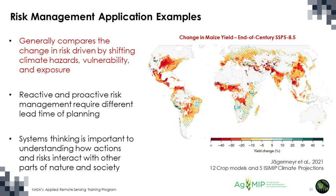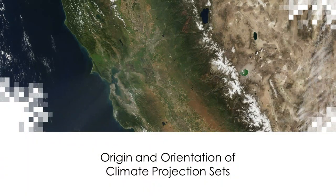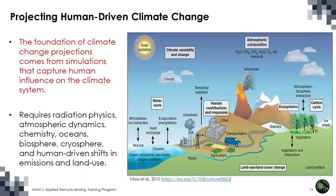In all of these examples, the particular nature of the application suggests certain types of projection sets we might look for. As we think about climate projection sets, it's worth understanding the origin and orientation of the groups making them. Climate change projections begin with an understanding of the climate system itself, requiring a detailed understanding of radiation physics, atmospheric dynamics, atmospheric chemistry and ocean chemistry, as well as the dynamics of the ocean, biosphere, cryosphere, and human-driven shifts in emissions and land use.